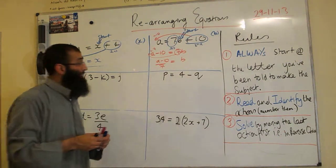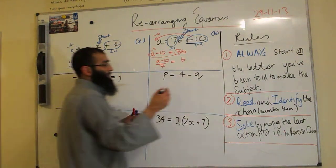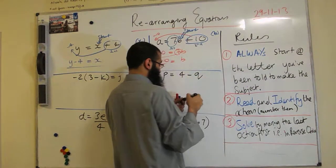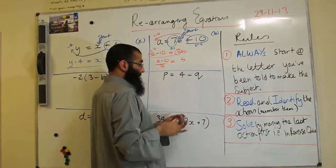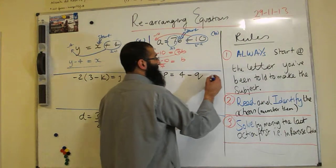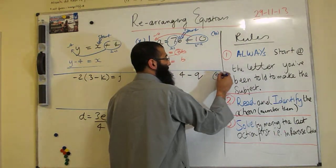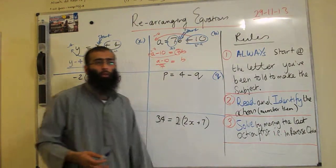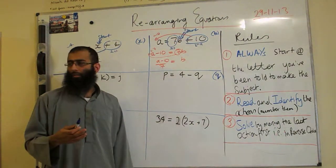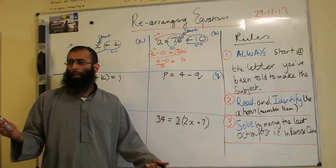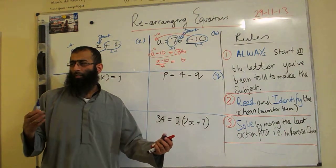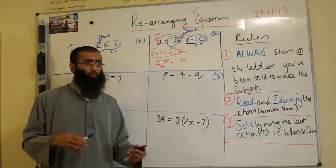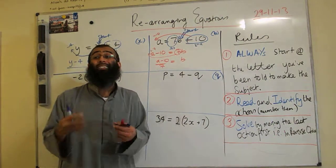Okay now, without any further ado, let's move on to the next question. This question is an important question because the item that we're looking to work out is negative. So in this question here, P equals 4 minus Q. The Q that we're looking for is negative. Nazma, do we normally have negative letters? No. We need it to be positive. We want to make Q the subject and not minus Q the subject.